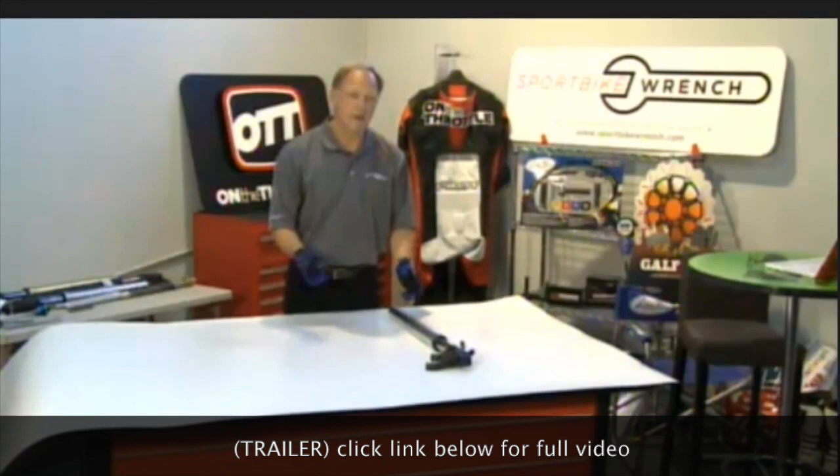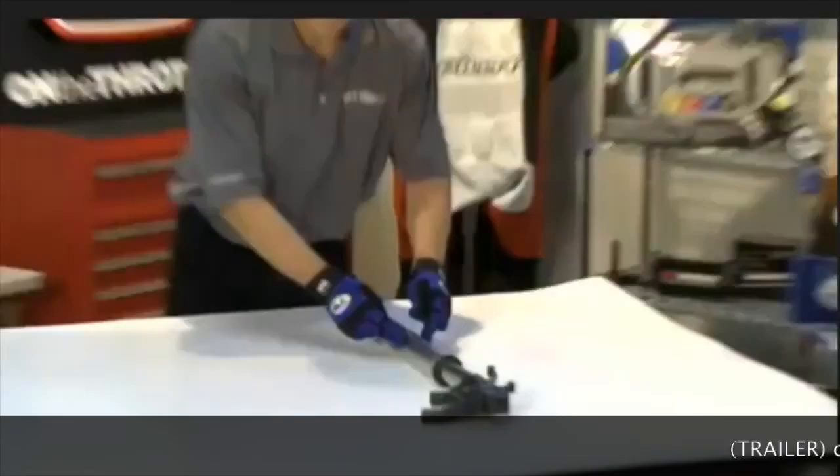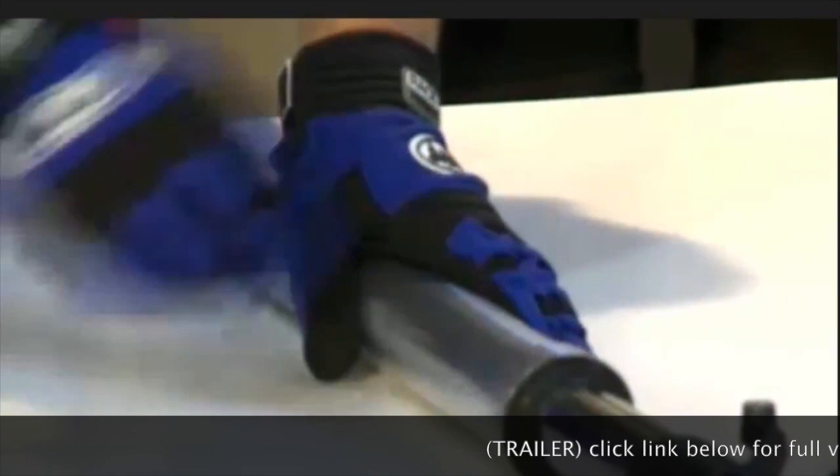Simple basics that are real important and fundamental to what we're going to do here. We have ourselves a ZX6 fork, upside down. The fork is clamped here in the upper triple clamp. It is clamped here in the lower triple clamp.